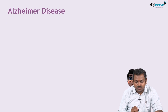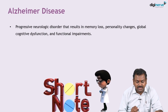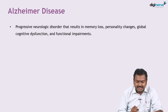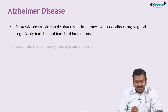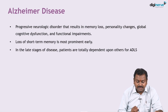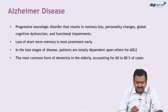Alzheimer's disease is by far the most common type of degenerative dementia. It is a progressive neurological disorder characterized by memory loss, personality change, global cognitive dysfunction, and functional impairments. Short-term memory is primarily affected, and in late stages of the disease, patients become totally dependent for basic activities of daily living.